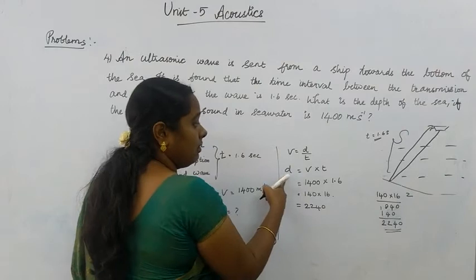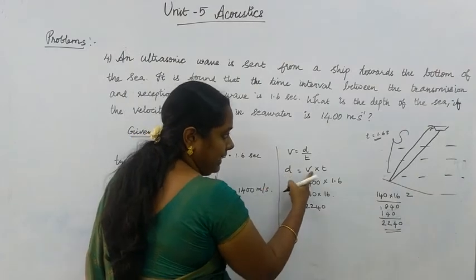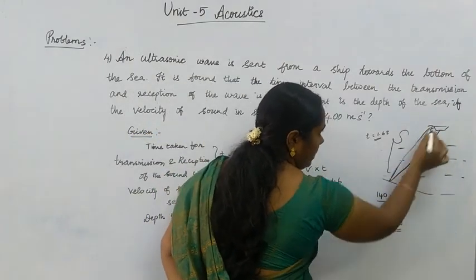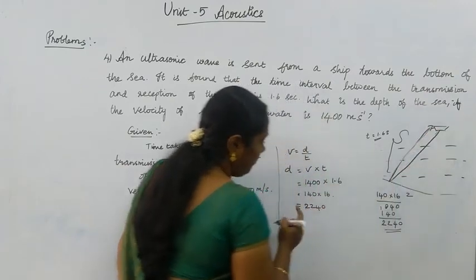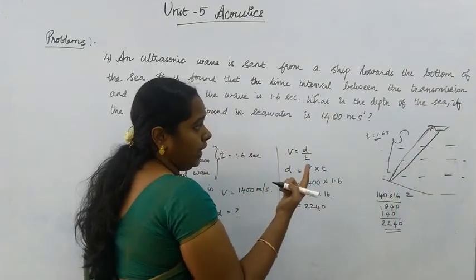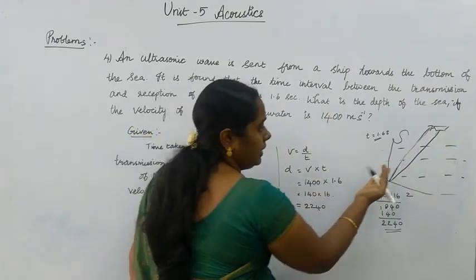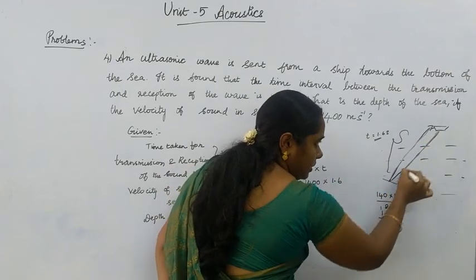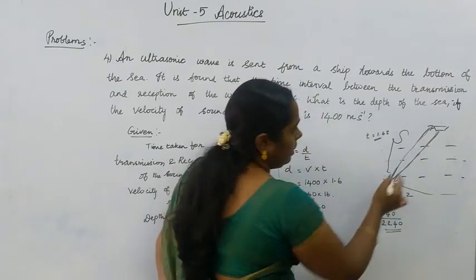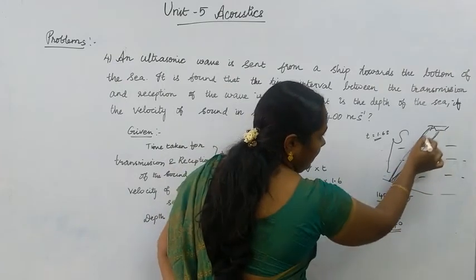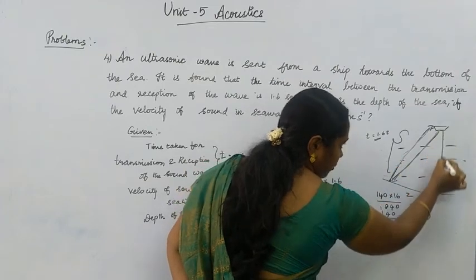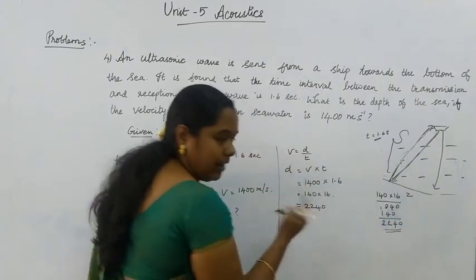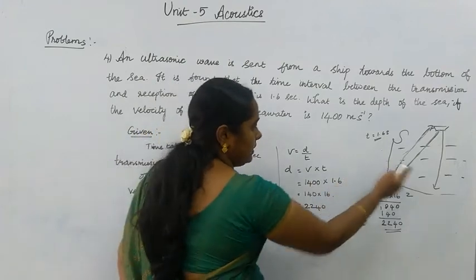This value 2240 is only D — that is, the total distance travelled by the signal from here to here. But what you want to find is only the depth — just one way down. So you need to divide by 2, because the time recorded covers the wave going down and coming back — it travelled twice the depth.